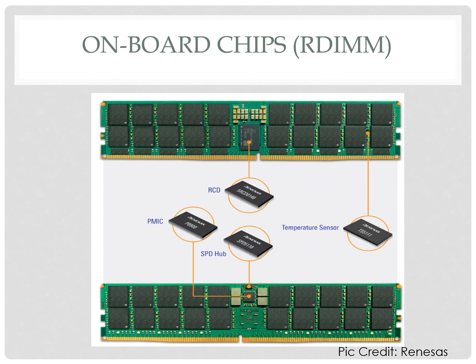The SPD, or serial presence detect, contains data related to the DIMM module. When the DRAM is inserted into a slot on a board, the serial presence detect provides configuration data for the RDIMM. As generations progressed from DDR3, the SPD data has increased, so the amount of memory required for it has also increased. This is how the RDIMM module of a DDR5 looks.